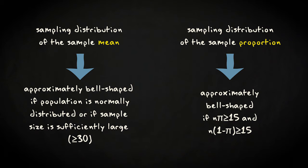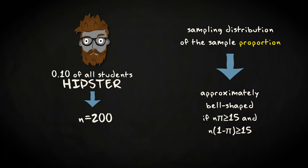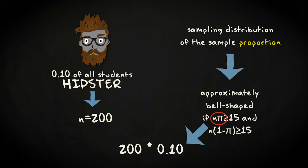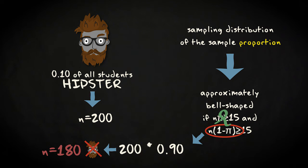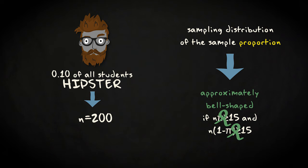You can express this as follows: n multiplied with pi is equal to or larger than 15, and n multiplied with 1 minus pi is equal to or larger than 15. What does that mean for our example? First, the product of the sample size and the population proportion should be 15 or more — in our case, that's 200 multiplied with 0.10, which equals 20 hipsters, and 20 is larger than 15. Second, the product of the sample size and 1 minus pi should be 15 or more — in our case, that's 200 times 1 minus 0.10 equals 200 times 0.90 equals 180, so 180 non-hipsters. We can conclude that the sampling distribution will be bell-shaped because 20 and 180 are both larger than 15.